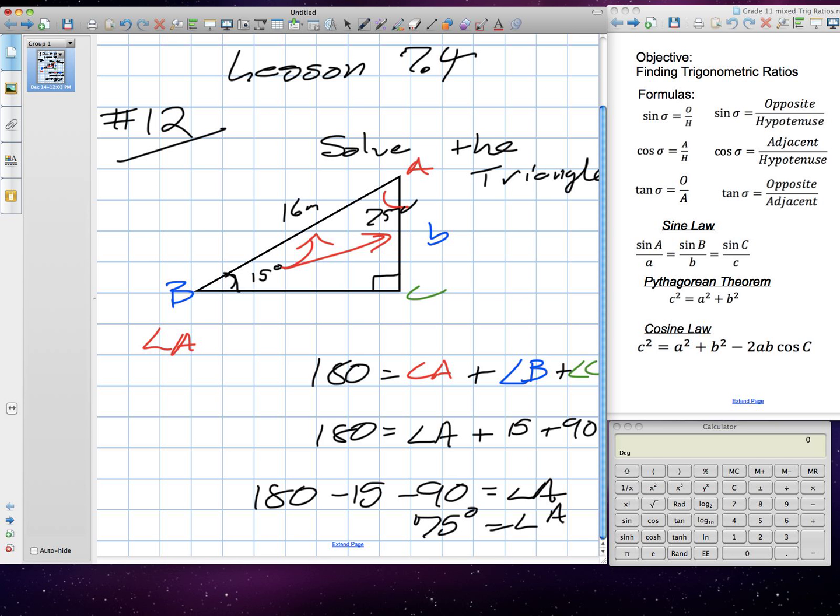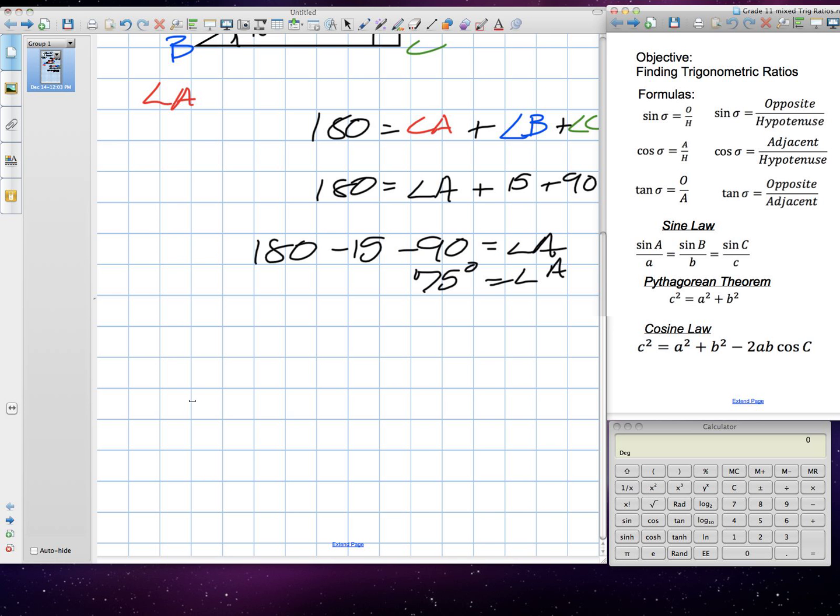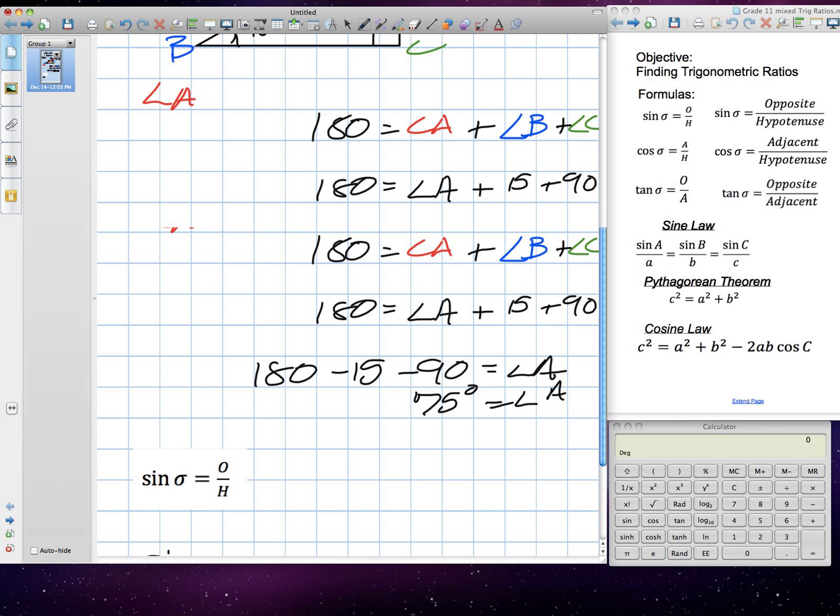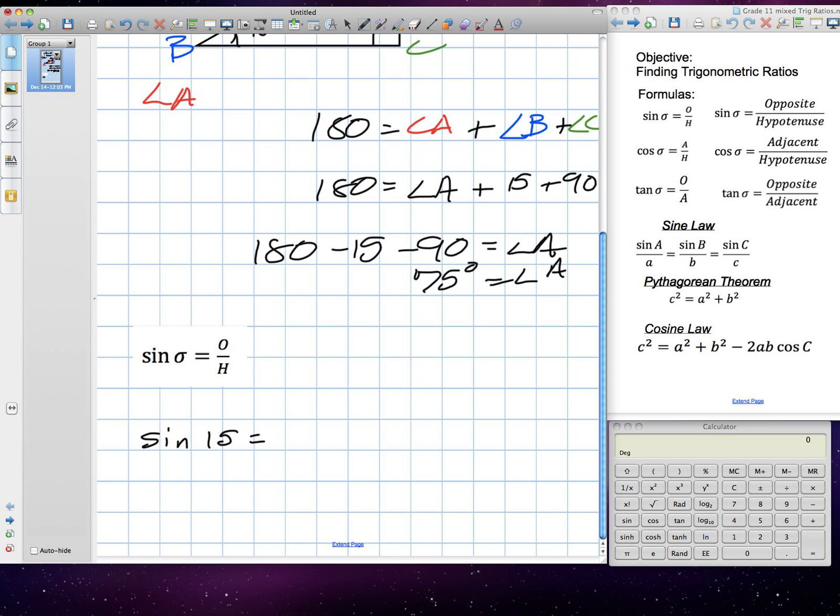That's right. Good. We have our sine here. So, sine, our angle was what measurement? 15. Good. 15 is equal to our opposite side is side B, and our hypotenuse was what? 16. Good.